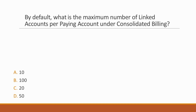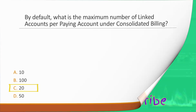Next question: By default, what is the maximum number of linked accounts per paying account under consolidated billing? Options: A. 10, B. 100, C. 20, D. 50. Correct answer is option C, because the default maximum is 20 linked accounts. This soft limit can be increased by contacting AWS.